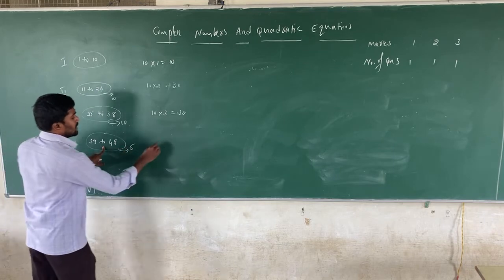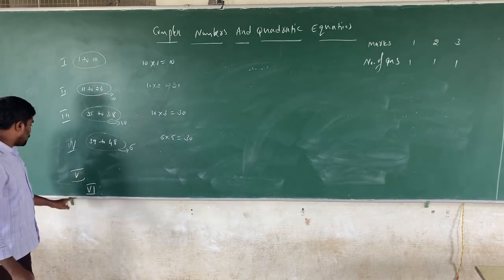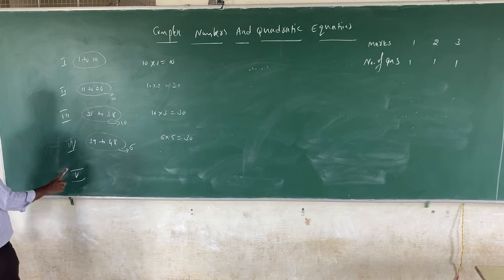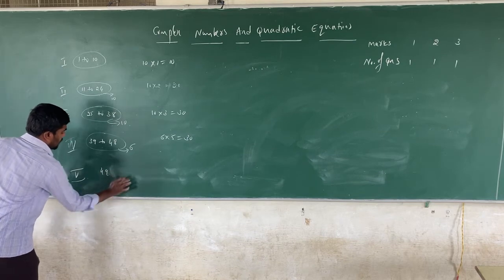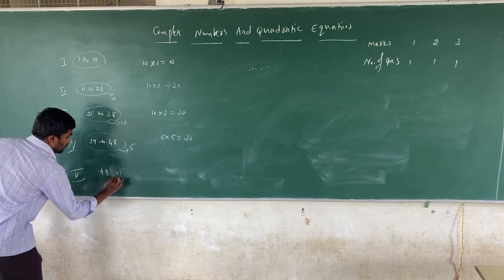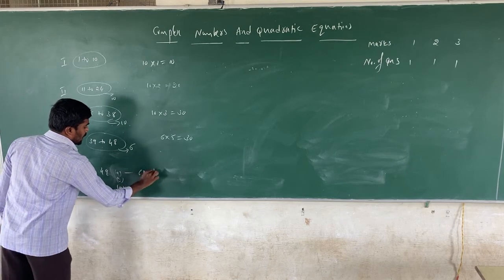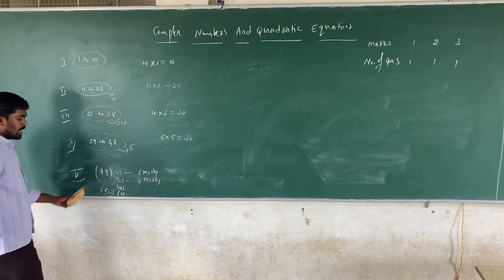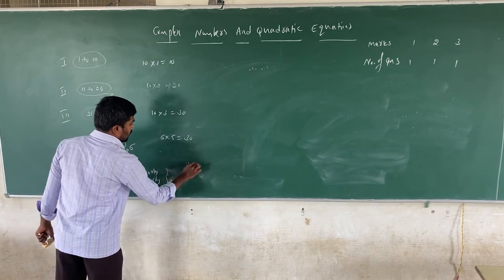Finally, in the fifth section there are 2 questions — question number 49 and question number 50. Question 49 has two parts: part A and part B. Question 50 also has two parts. Part A carries 6 marks and part B carries 4 marks. Among them, you have to answer only 1 question, so 1 into 10 equals 10 marks. The total marks you have to answer is 100 marks, but the question paper carries 150 marks.